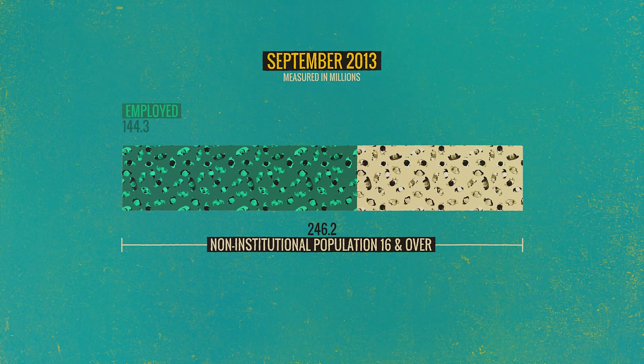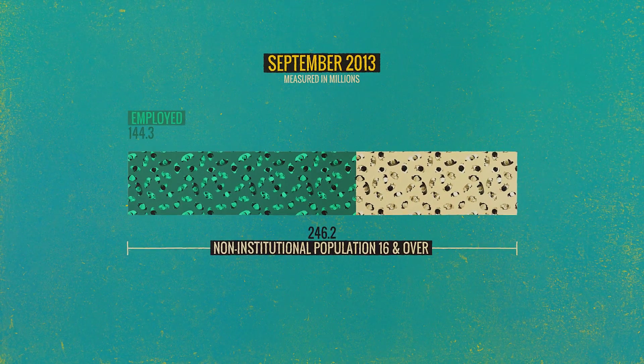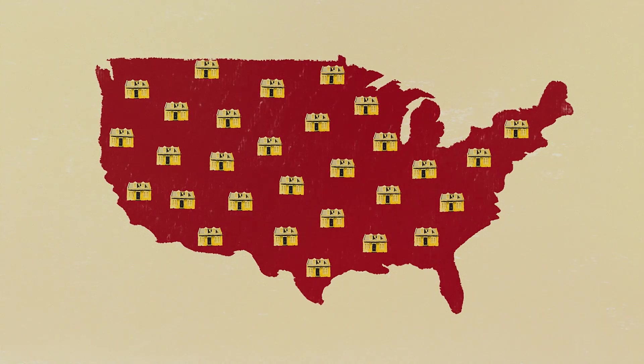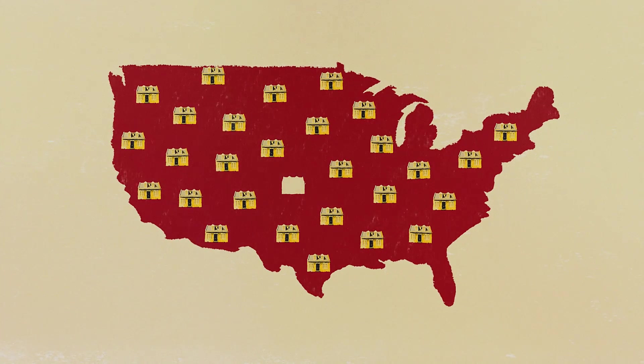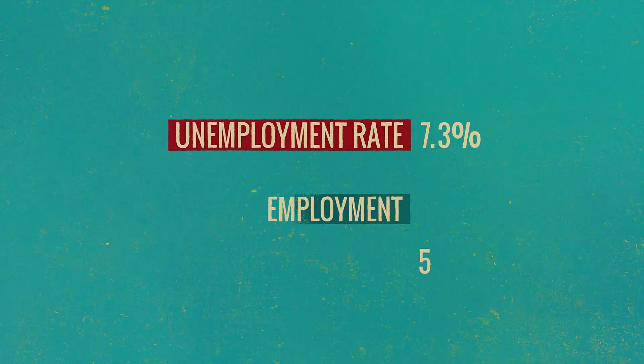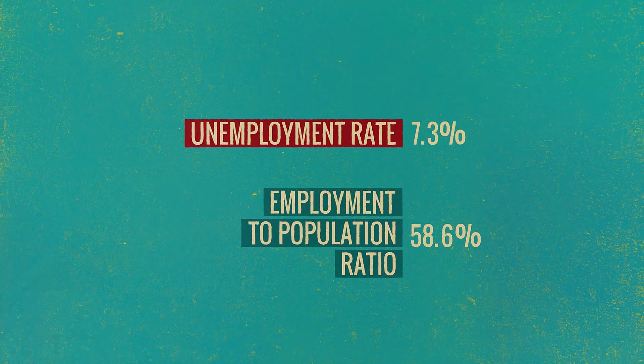Sometimes economists also look at a different measure: total employment compared to the population. In this case, total employment is 144.3 million and the population is 246.2 million, giving a ratio of 58.6%. That measure is sometimes more useful because it doesn't rely on the difficult determination of whether someone is in the labor force or looking for work. This has become particularly important in recent years, as many people have dropped out of the labor force due to tough economic times and are no longer counted as unemployed, making the unemployment rate probably too low.